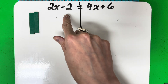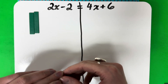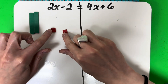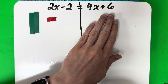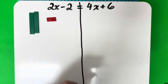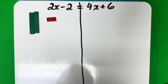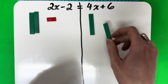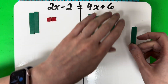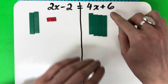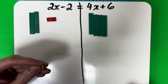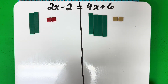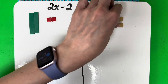And then negative 2 — that's a constant because it doesn't have a variable, so that means I want the little square. It's negative 2, so I want the red side. Now let's do the other side: positive 4x has a variable, so I want the rectangles. It's positive, so I want the green side — four green rectangles. And then plus 6, that's a constant, so I'm going to use the square. It's positive 6, so it's going to be the yellow side.